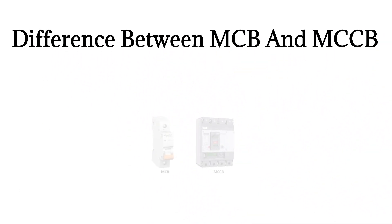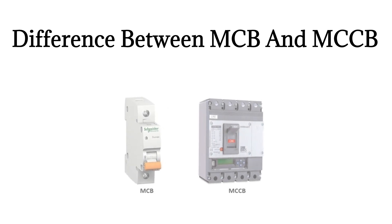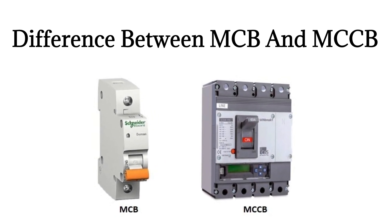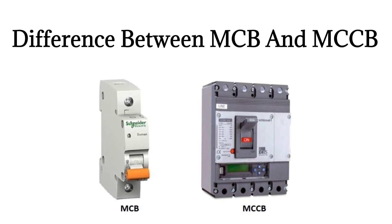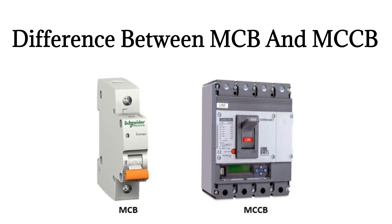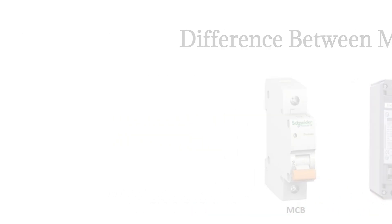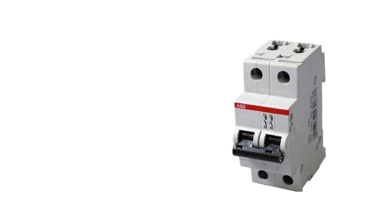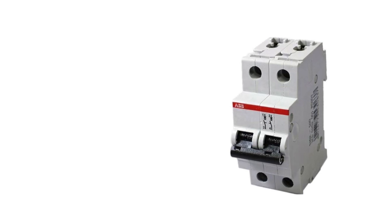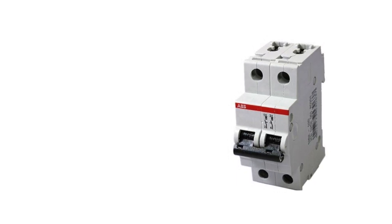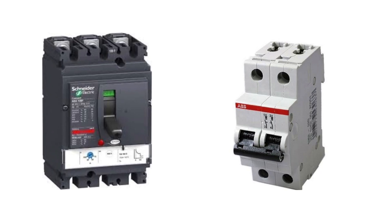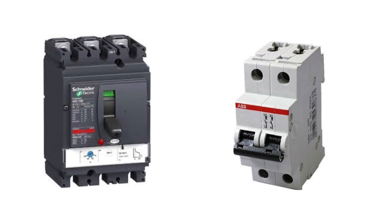Difference between MCB and MCCB. Most people are confused about the differences between MCB and MCCB. Although both are circuit breakers, there are actually key differences between the two that make them specially made for specific jobs. Before we talk about the key features of each, it is important to understand what the abbreviations stand for. MCB stands for Miniature Circuit Breakers, while MCCB is Molded Case Circuit Breaker.